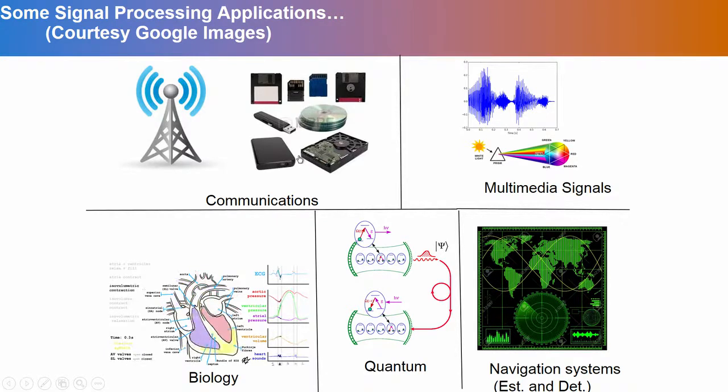Whenever we think about signal processing, many applications come to our mind. For example, applications in communications, applications in multimedia signals, applications in biology, applications in navigation systems and something as far reaching as quantum. What is the commonality in all these systems? Let us take one example, some things which people are familiar with say communication systems.